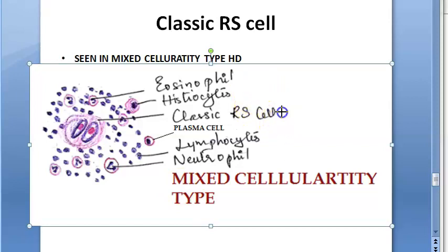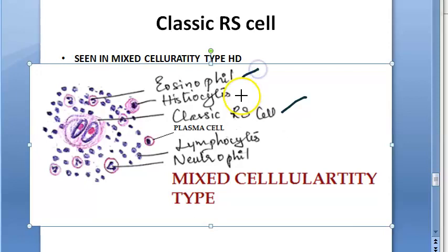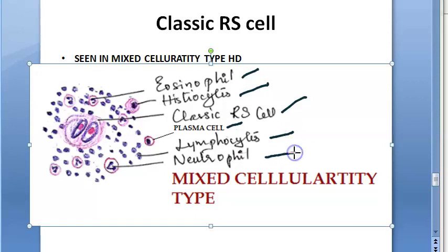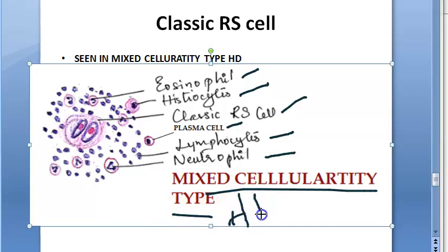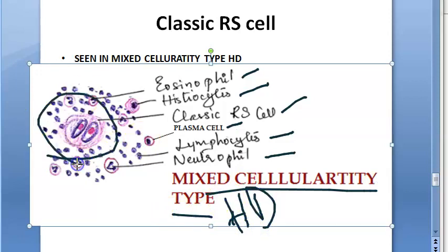In the classic RS cell of mixed cellularity type, you see — in addition to the RS cell — eosinophils, histiocytes (macrophages), plasma cells, lymphocytes, and neutrophils. All types of cells are present, which is why it is called mixed cellularity. The presence of the Reed-Sternberg cell in the lymph node confirms Hodgkin disease.